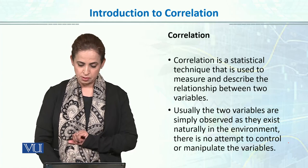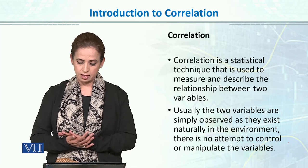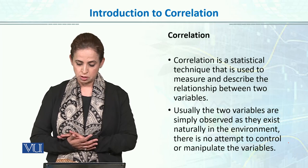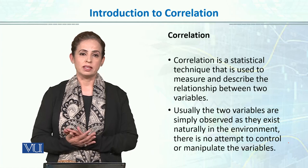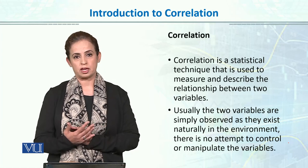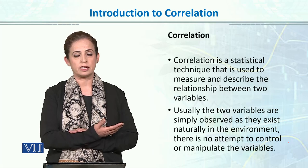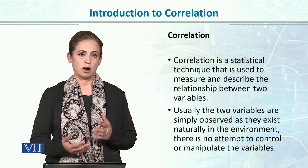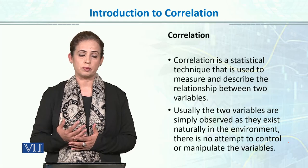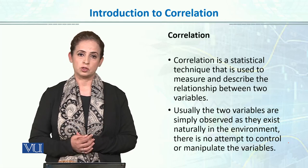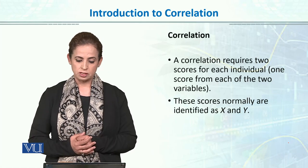Usually, the two variables are simply observed as they exist naturally in the environment. There is no attempt to control or manipulate the other variables. So one thing is that we just observe the variables — how they are actually lying in the real environment, how they both are existing in the environment without manipulation or without controlling any other extraneous variables.